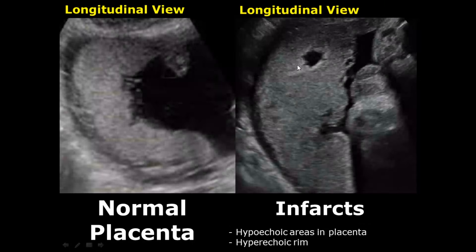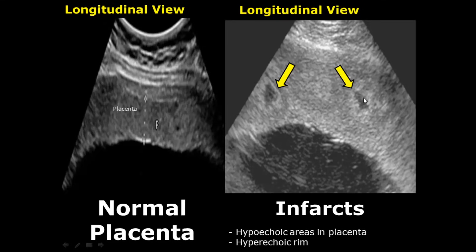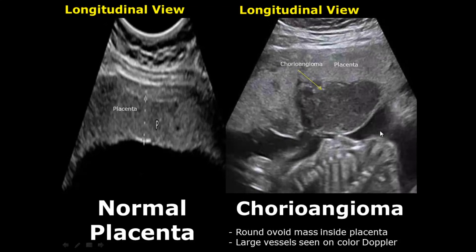Infarcts in the placenta appear as hypoechoic areas, but one distinguishing feature is that they have a hyperechoic bright rim. In this image you can see two infarcts — they are hypoechoic and have a hyperechoic rim.